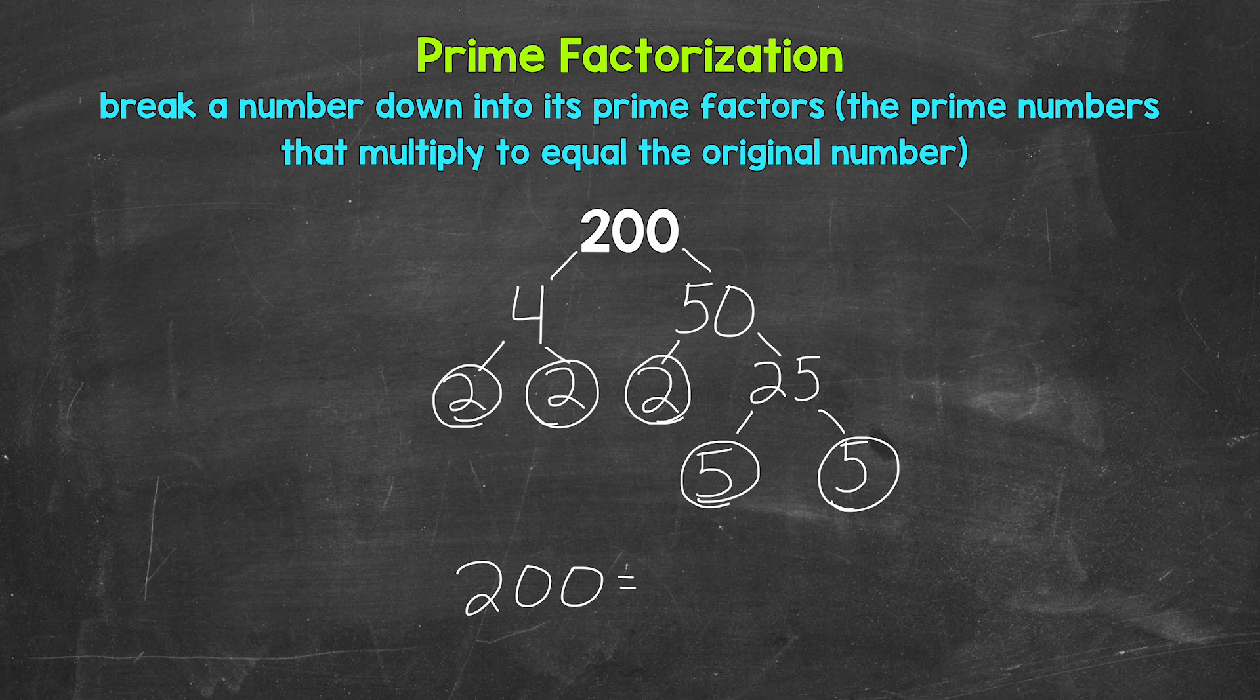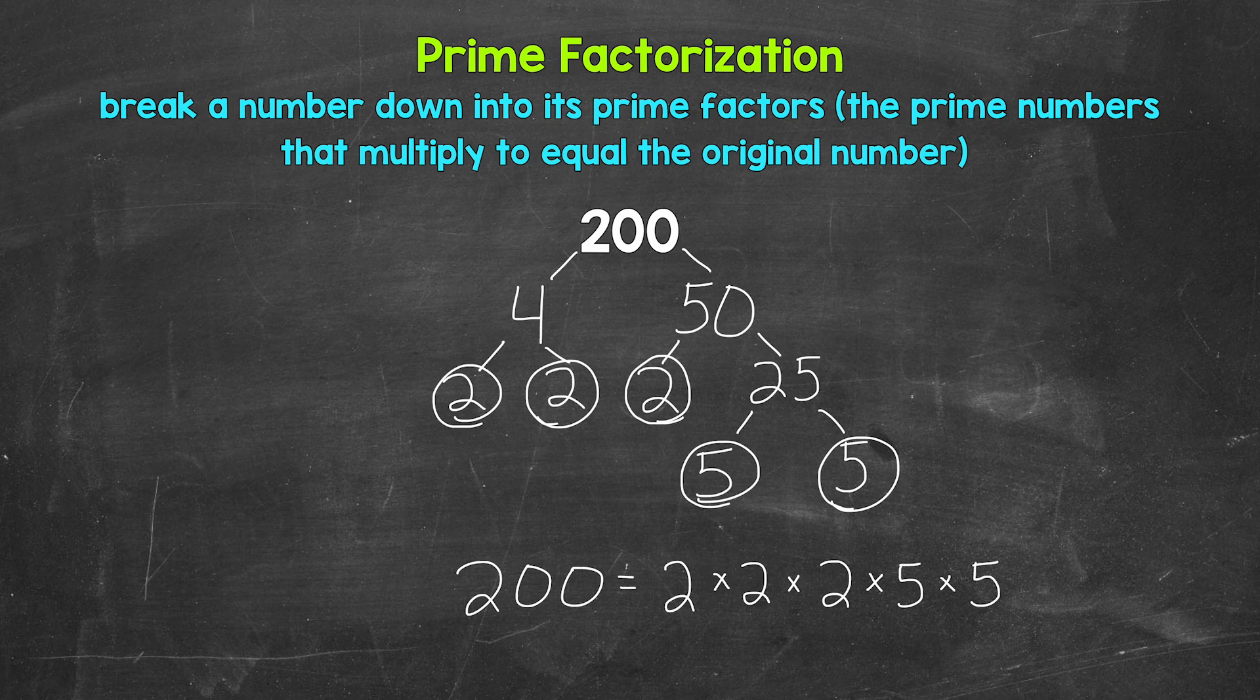So we'll start with the three 2s: 2 times 2 times 2, and then we have two 5s, so times 5 times 5. If we have the correct prime numbers, they will multiply to equal our original number. So let's check here. 2 times 2 is 4, times 2 is 8, times 5 is 40, times 5 is 200. So we are correct here.